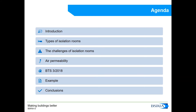We're going to begin with a brief introduction on isolation rooms and the types of isolation rooms that there are, which some of you may have seen in yesterday's presentation, as a way to introduce isolation rooms before we focus on air tightness. Then we will go through the challenges we face and how to calculate air tightness, and what BTS3 2018 is. We will continue with an example and then sum up this presentation.